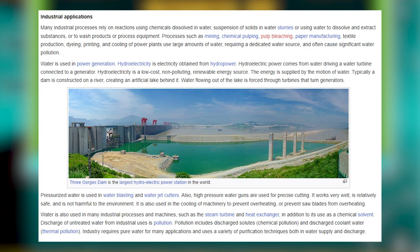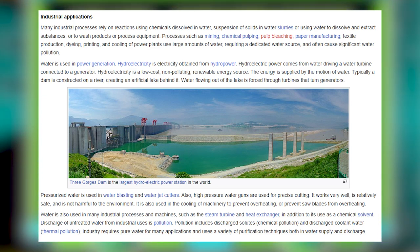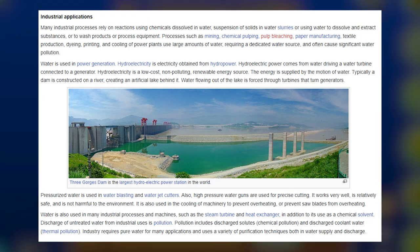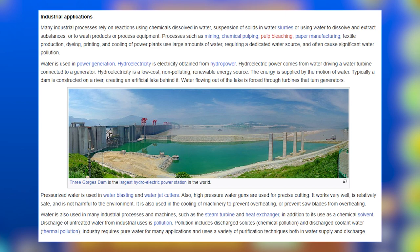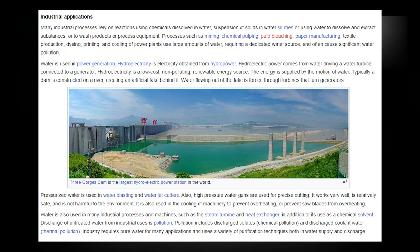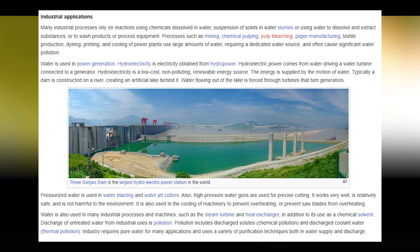Pressurized water is used in water blasting and water jet cutters for precise cutting; it is relatively safe and not harmful to the environment. Water is also used in the cooling of machinery to prevent overheating. Water is used in many industrial processes and machines such as steam turbines and heat exchangers in addition to its use as a chemical solvent. Discharge of untreated water from industrial uses constitutes pollution, including chemical pollution from dissolved solutes and thermal pollution from coolant water. Industry requires purified water for many applications.